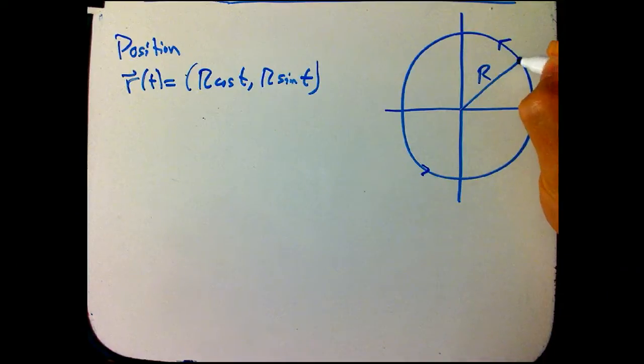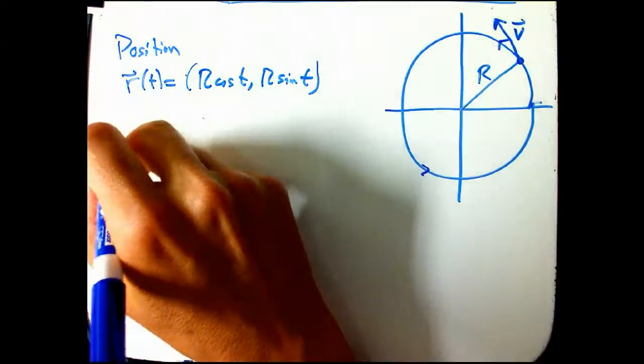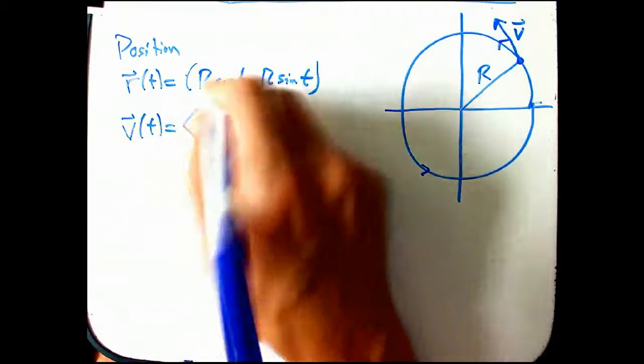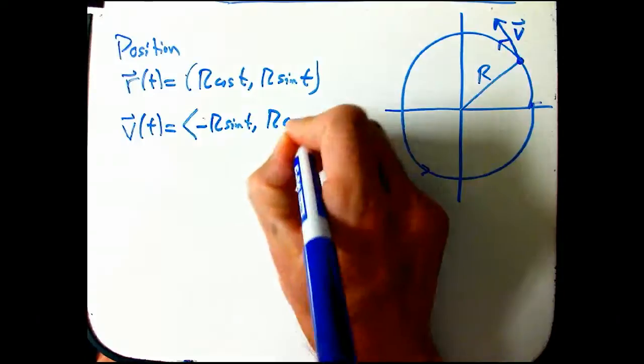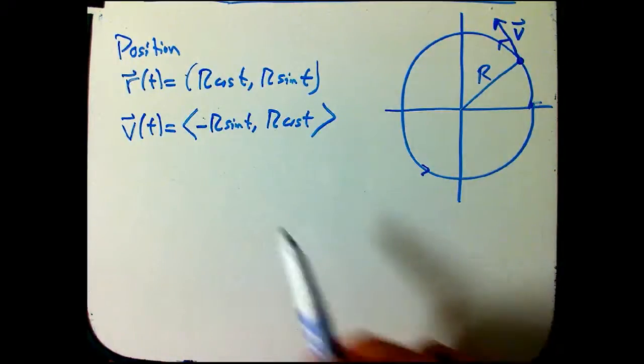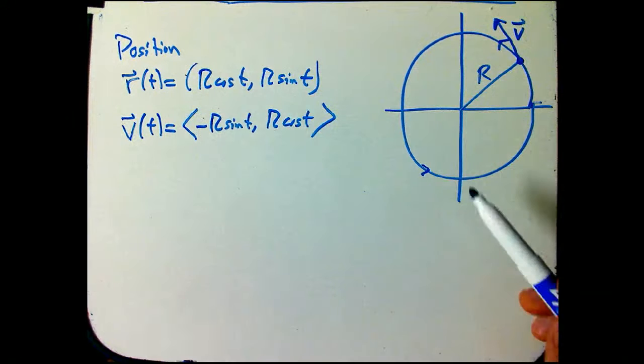For example, for a certain value of t, somewhere about π/4 maybe, here's the location of the particle. Now, what about its velocity vector? That's going to be going in this direction, tangent to the circle. Let's go ahead and calculate that. v(t) is going to be, just take the derivatives, -r sin t, r cos t. I put it in angle brackets because it really is a vector. This guy deserves to be a vector too, but you can also think of it as a variable point. But this guy really is a vector that's an arrow.